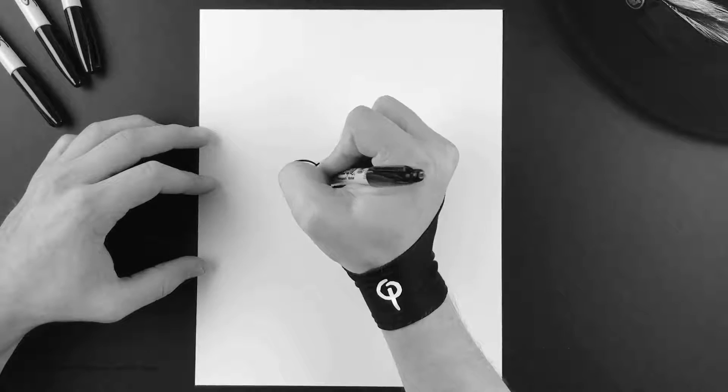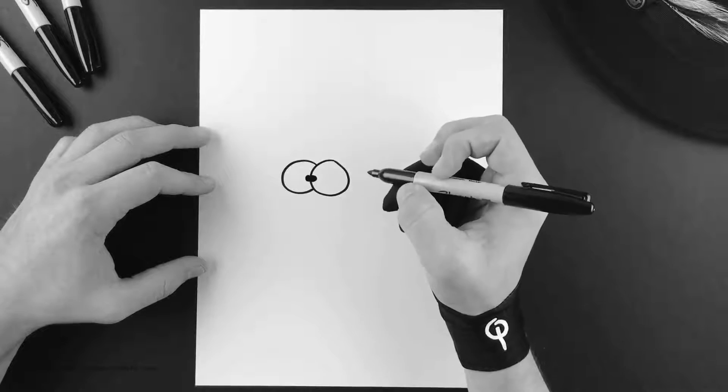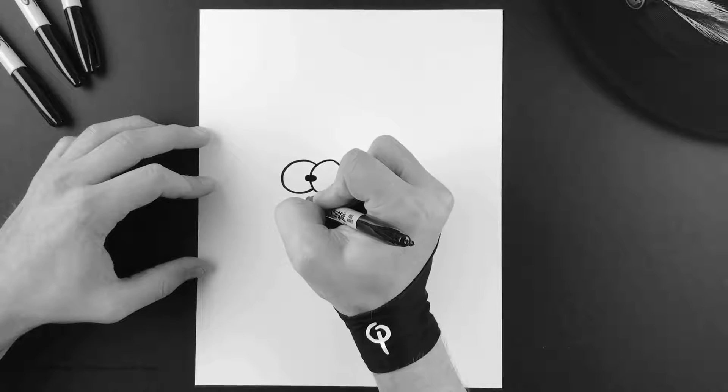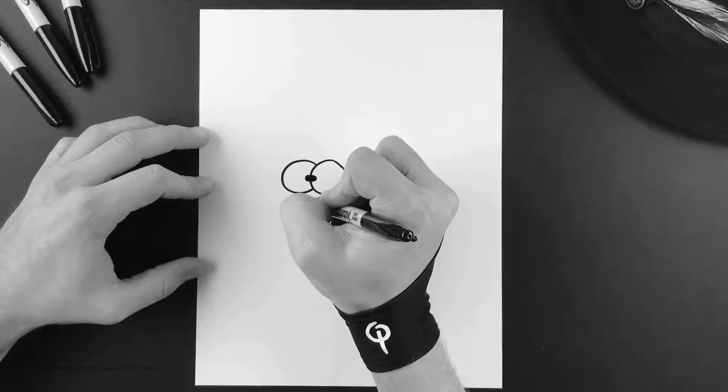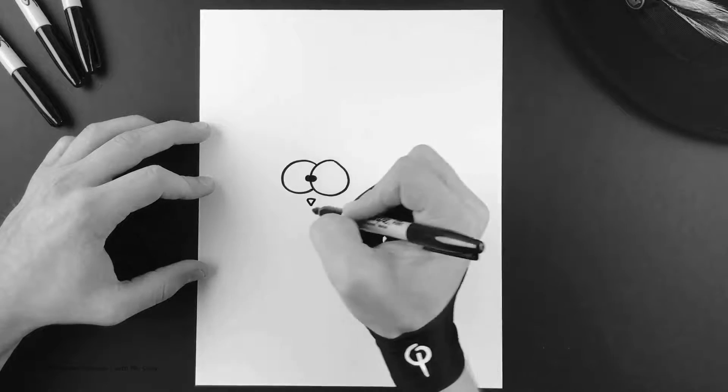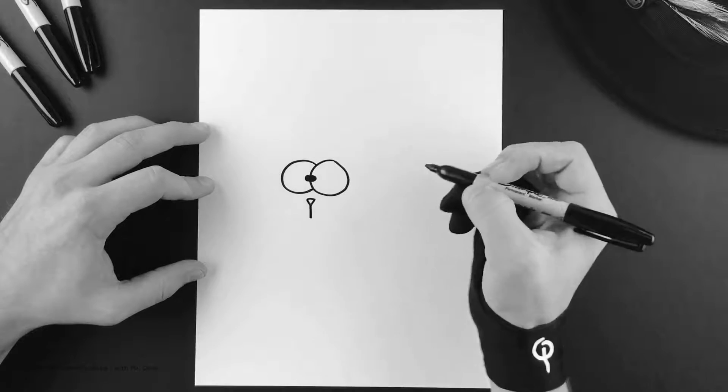Next we're gonna build in his little nose, upside down triangle, and then straight down from that will be his mouth.